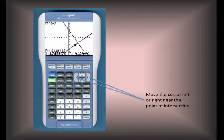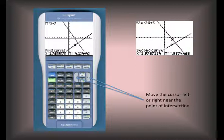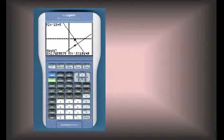After we press enter, we'll get another screen that says second curve, and you can see that y sub 2 is equal to negative 2x plus 5 as displayed in the upper left-hand corner. This time the cursor will be on the other curve or line. You can move the cursor once again using the left and right arrows so that cursor is also close to the point of intersection of the two lines.